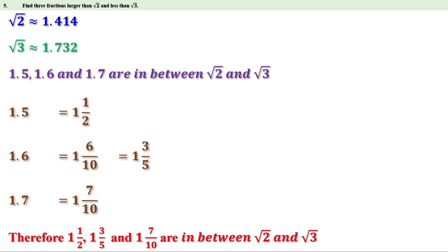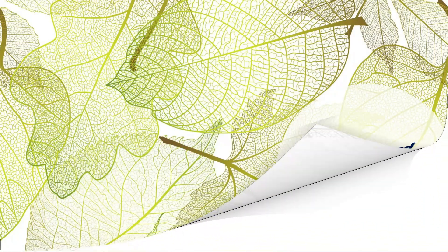If you are asked to find more numbers: 1.42 is larger than 1.414, so 1.42, 1.43, etc. are all more than √2. Similarly, 1.73 is less than 1.732, so 1.73, 1.72, etc. are all less than √3. That means 1.42 through 1.73 are all between √2 and √3 — there are 32 such numbers, giving 32 fractions. Today let us discuss the next section: addition and subtraction.